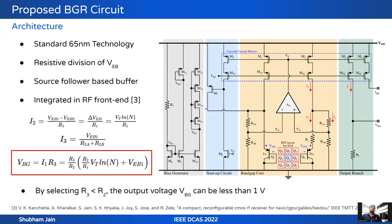The complete schematic of the proposed BGR circuit is shown in this slide. The proposed BGR circuit is designed in standard 65 nm CMOS technology. A resistive divider is used, similar to the MOC design. A source follower based buffer is used at the OTA input to address biasing issues. I2 is the difference of VEB/R1, which is VT·ln(N)/R1, and I3 is obtained as VEB/(R2A+R2B), combined as R2. The output VBG can be written as I1·R3 = (R3/R2)·(R2/R1)·VT·ln(N) + VEB. By selecting R3 less than R2, the output voltage VBG can be set to less than 1 volt.